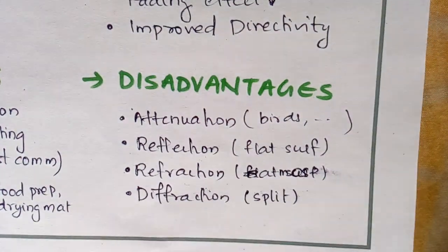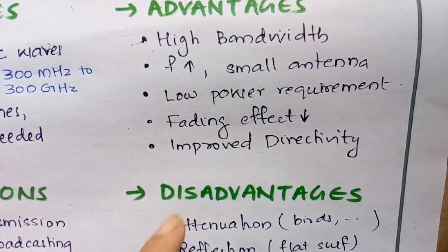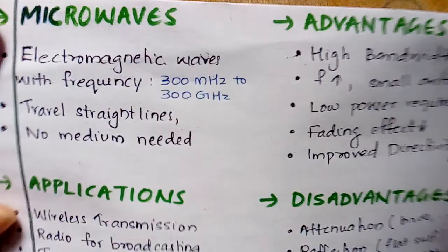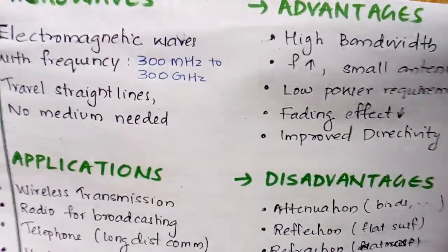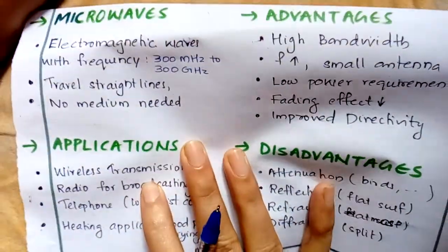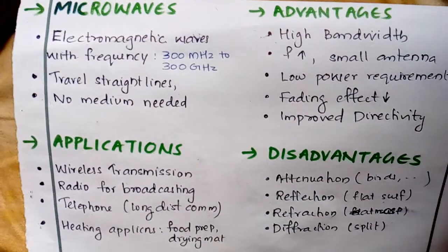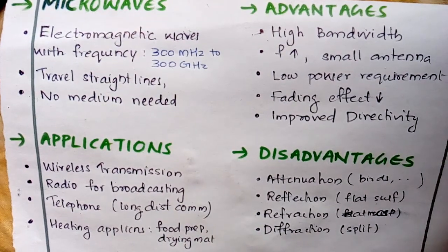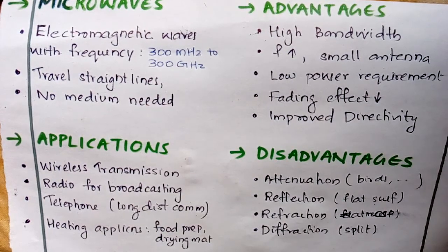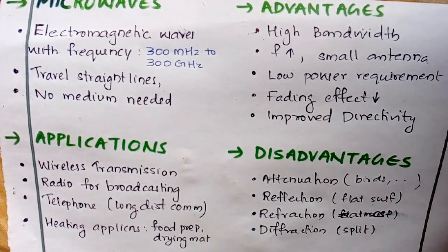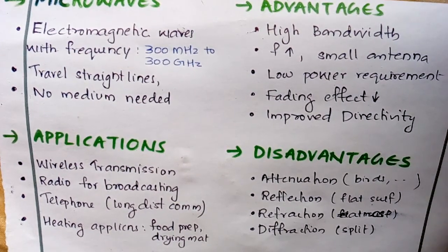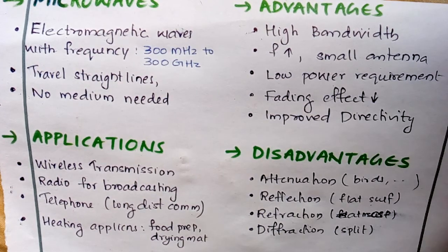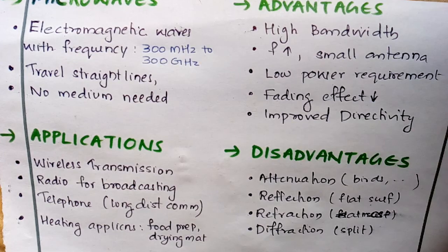So those are the four disadvantage points. Remember the advantages in the way I told you. The frequency range is 300 megahertz to 300 gigahertz. I'm putting this in full screen so you can take a screenshot if you need. If this video was useful, please subscribe and press the bell icon for future videos — especially if you are an engineering student, this will be very useful for your exams.